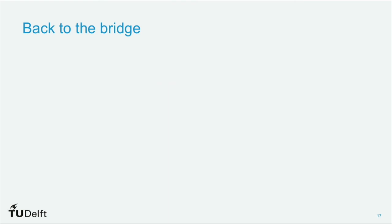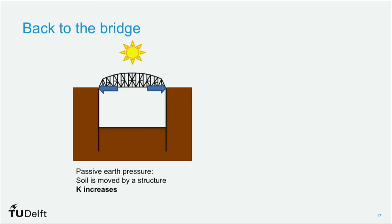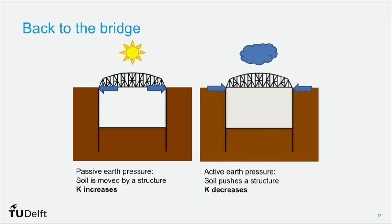So let's look at what happens again in our bridge situation. So we have this bridge which is expanding, pushing the soil structure, so our soil is passive, and our K increases and becomes large. If we have a bridge which is shrinking, we have an active situation where the soil is pushing a structure, K decreases and becomes much smaller. And if we look at how we can calculate these limits from our friction angle and from our cohesion and our active earth pressure coefficients, we can calculate the limits of this stress.